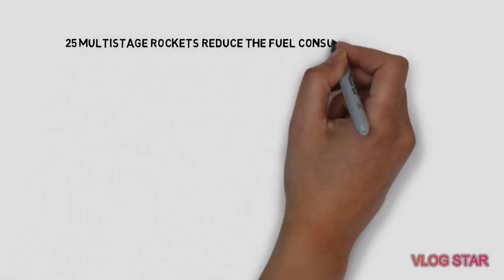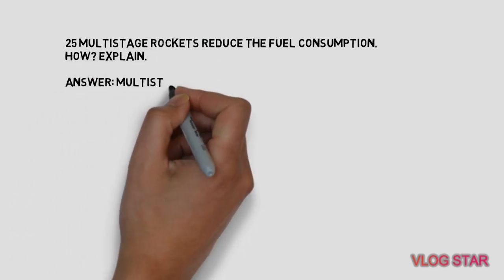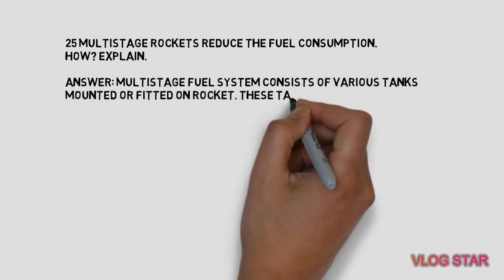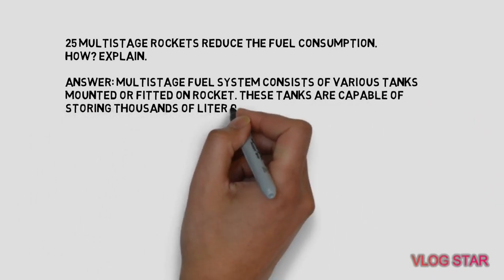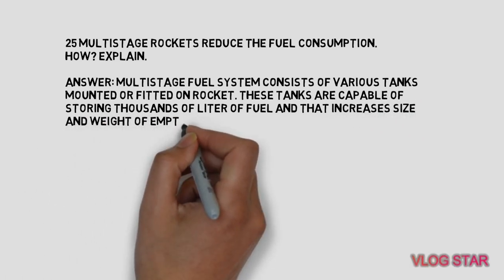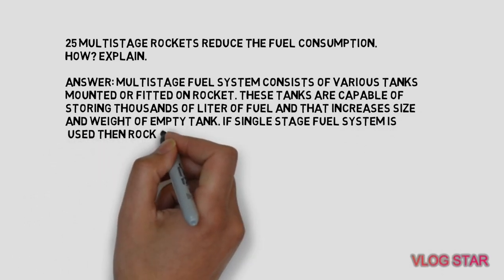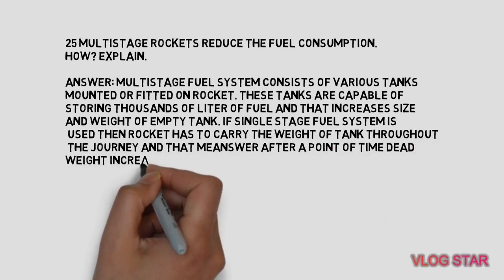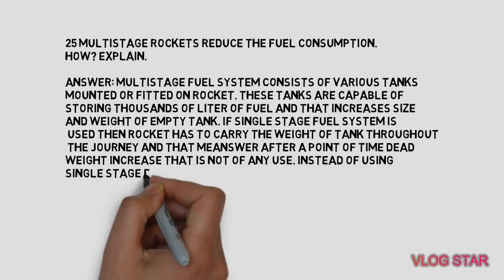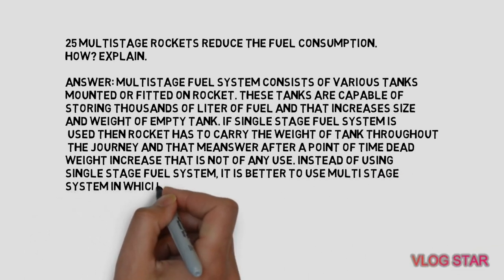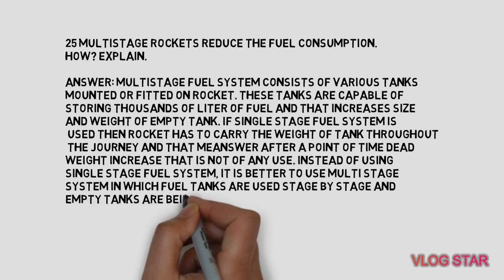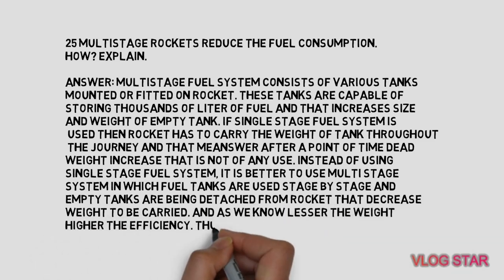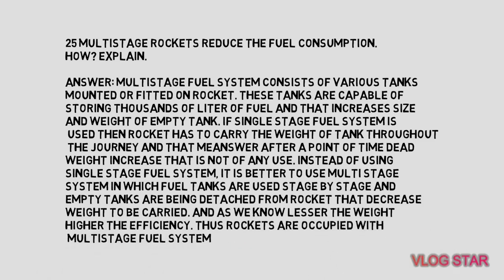Multi-stage rockets reduce fuel consumption. How? A multi-stage fuel system consists of various tanks mounted on a rocket. These tanks store thousands of litres of fuel but increase the size and weight of the empty tank. If a single-stage system is used, the rocket must carry the weight of the tank throughout the journey, and dead weight increases over time. In a multi-stage system, fuel tanks are used stage by stage and empty tanks are detached, decreasing the weight carried. Lesser weight means higher efficiency.